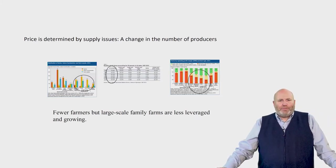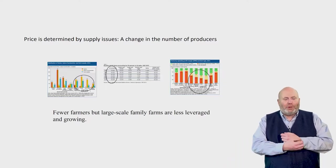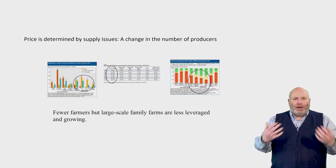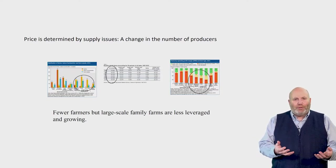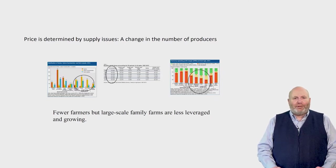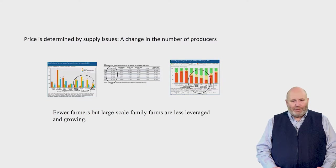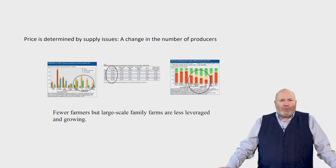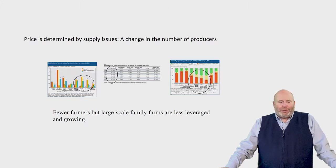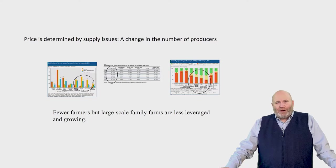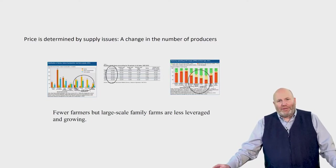Let's look at a change in the number of producers. Using an example from production agriculture: we're getting fewer farmers, but the larger-scale farmers are becoming more family-owned corporations that are less leveraged and growing, based on USDA data. So we're seeing a decrease in the number of producers, but the size of those producers is going up. The impact on the supply curve is measured by market share, acres planted, and bushels harvested.